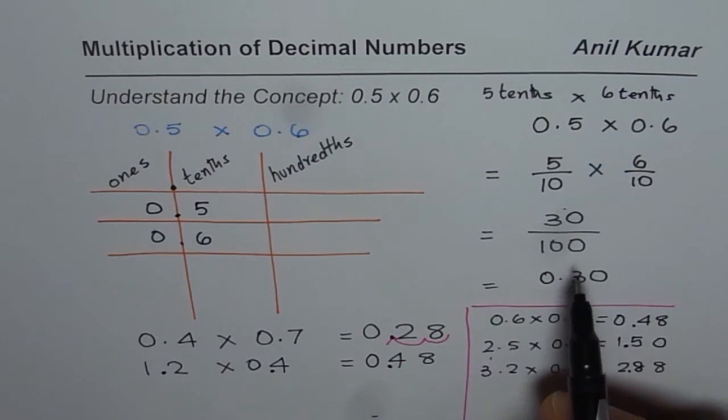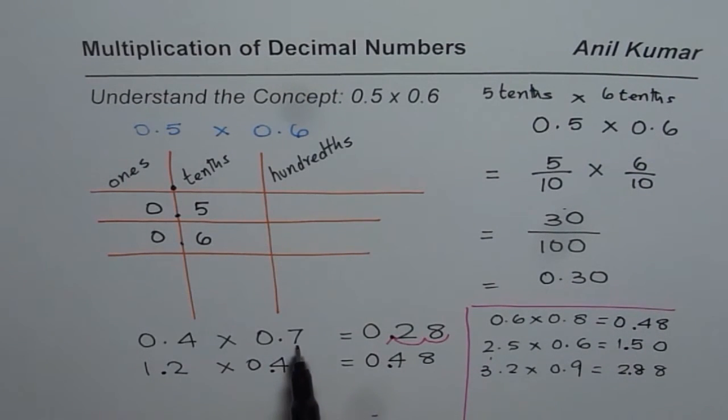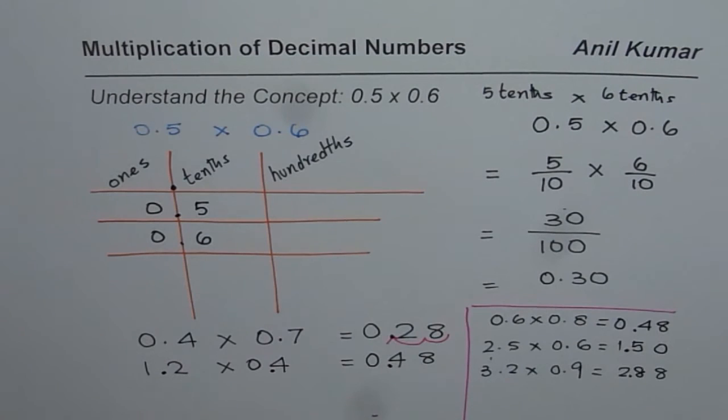Multiply numerators and denominators, and then write in decimal form to get the answer, one way of doing it. The other way is multiply as if the decimal number is not there, and then count the numbers after decimal, place the decimal with same numbers after decimal. So likewise, you can multiply decimals very easily. I hope that helps. Thank you and all the best.